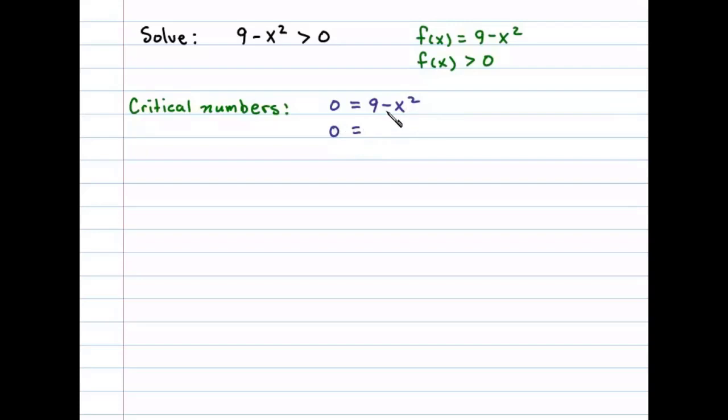9 minus x squared is a difference of squares, so this factors as 3 plus x times 3 minus x. Setting each factor equal to zero, we can see that there will be two critical numbers.